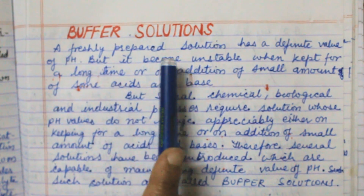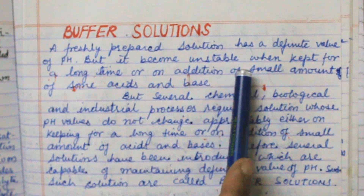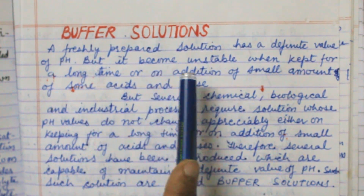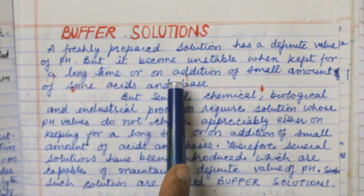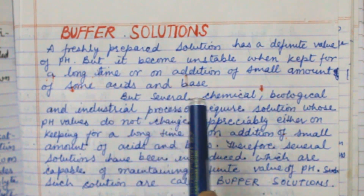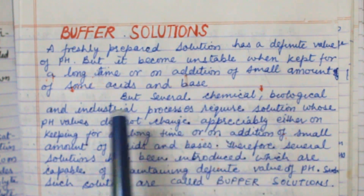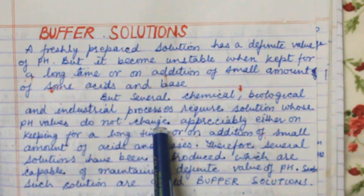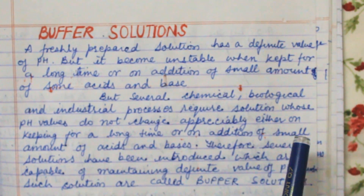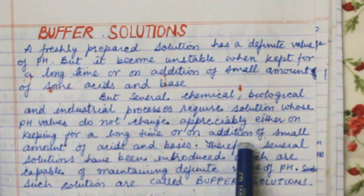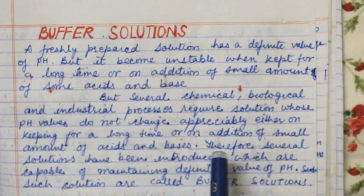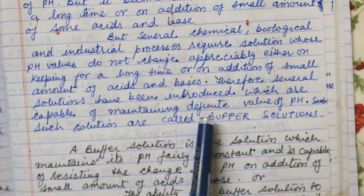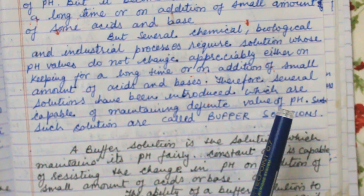Hello students, today my topic is buffer solutions. A freshly prepared solution has a definite value of pH, but it becomes unstable when kept for a long time or on addition of a small amount of acids and bases. Several chemical, biological, and industrial processes require solutions whose pH value does not change appreciably either on keeping for a long time or on the addition of a small amount of acids and bases. Therefore, several solutions have been introduced which are capable of maintaining a definite value of pH.